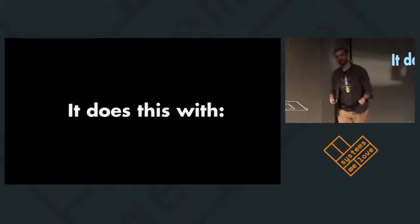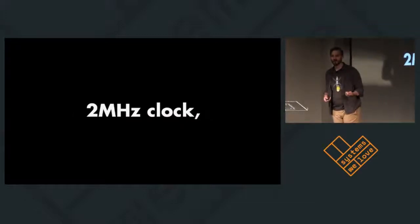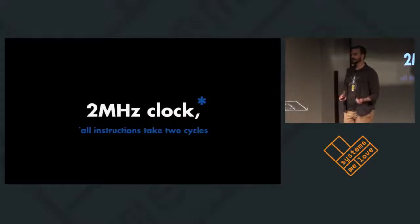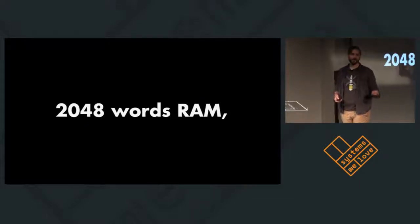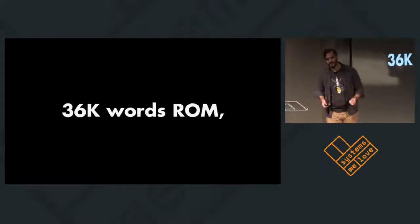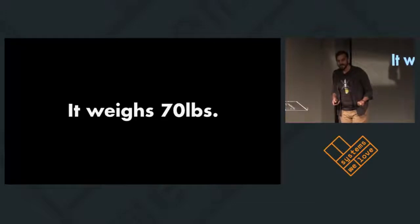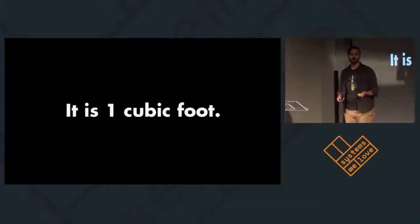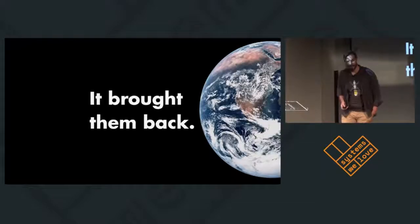So the Apollo spacecraft does this with five interrupts, a two-megahertz clock, accepting that all instructions actually take two cycles to execute, 16-bit words, one parity bit, 15 data bits, 2,048 words of RAM, 36K words of ROM, and 17 registers. It weighs 70 pounds. It is one cubic foot. It draws 55 watts. It landed men on the moon, and it brought them back.